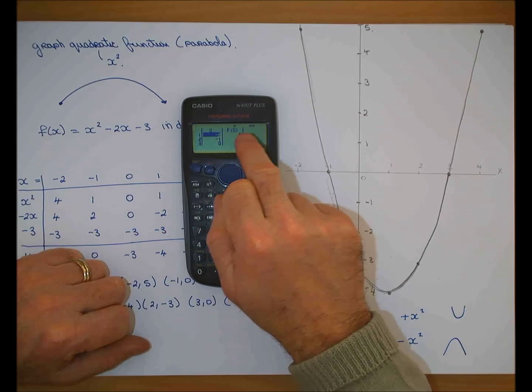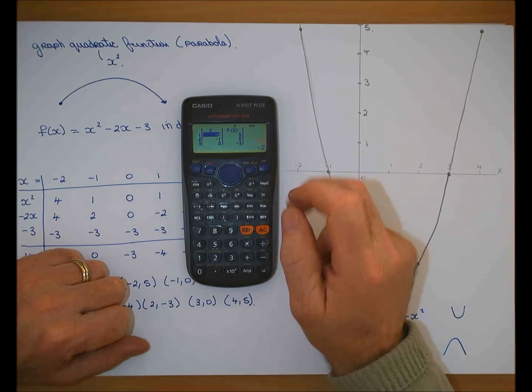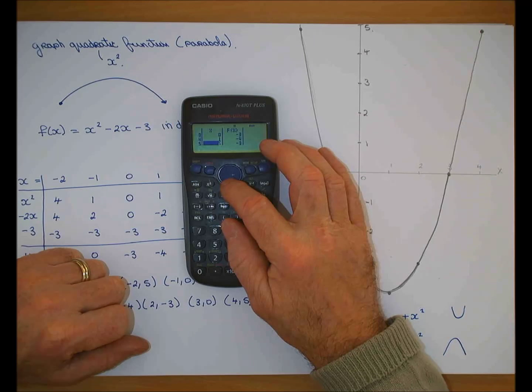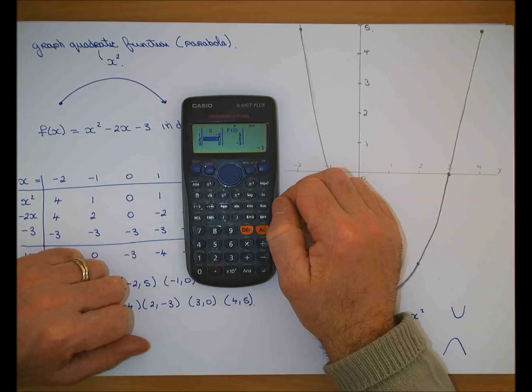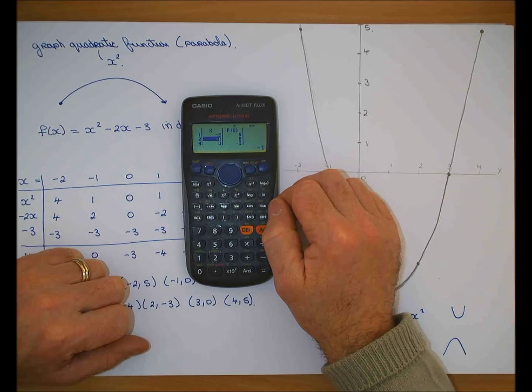And then it gives you your table. It says minus 2, 5. Minus 1, 0. 0 minus 3. And it will say 1 minus 4, 2 minus 3, and it gives you your set of points. So not much excuse for getting the table incorrect.